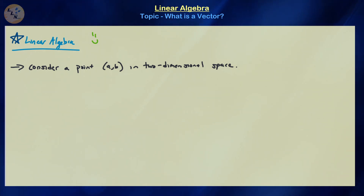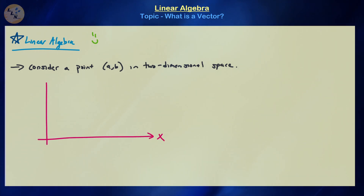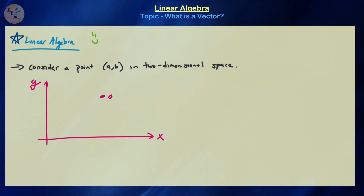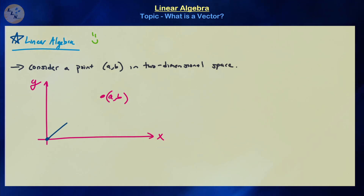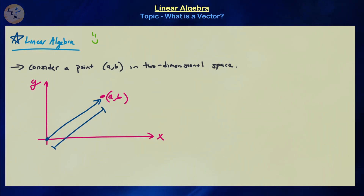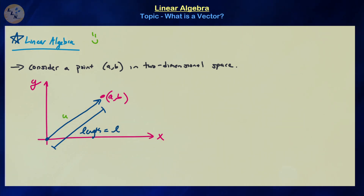To begin, let us consider a point (a, b) in two-dimensional space. Let this be the x-axis and this be the y-axis, and let this be the point (a, b). So a vector is an object that has some particular length that points in the particular direction of this point. Let's assume that we want some vector of length l, and this vector's name is u.